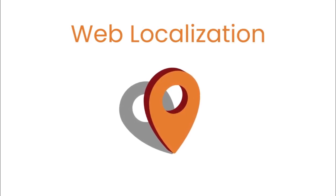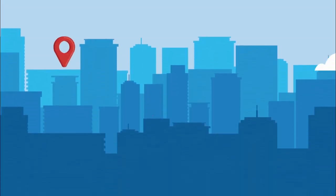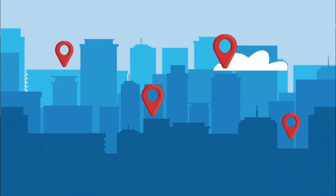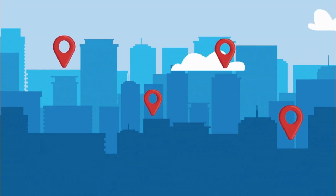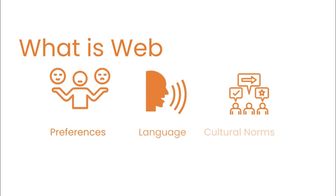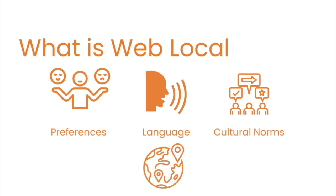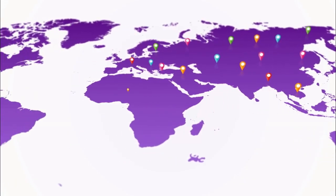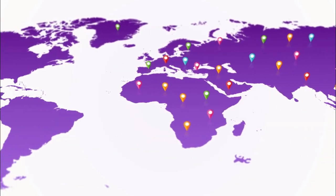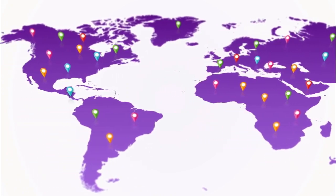Hello developers! Today we will learn about web localization and how to integrate it using a popular API. Web localization refers to the process of adapting a website or online content to suit the preferences, language, and cultural norms of a specific target audience in different geographical locations.